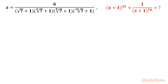Hello everyone, welcome to InfiGya. In this very exciting video on algebraic expressions, we will be simplifying two problems. The first one is x = 6 over (√7 + 1)(⁴√7 + 1)(⁸√7 + 1)(¹⁶√7 + 1), and we have to simplify the expression (x+1)^32 + 1/(x+1)^16. Let's get started.